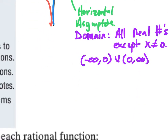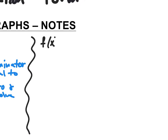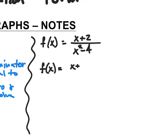Let me give you another example. Let's say you have f of x equals x plus two, divided by x squared minus four. This graph is a little bit more complicated. I've got the binomial x plus two and x squared minus four. The first step is to factor everything — see what factors you have. X squared minus four factors to x plus two times x minus two.